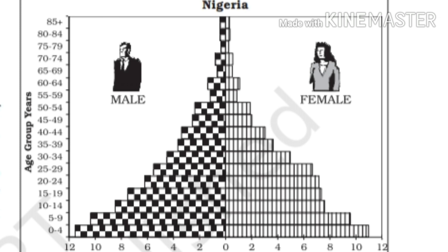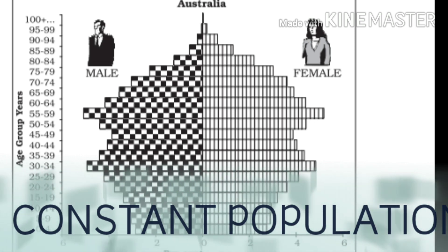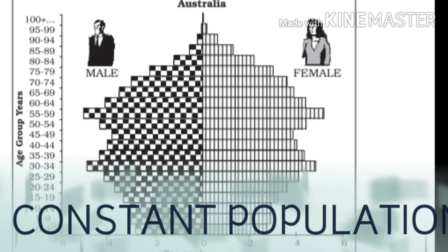In this pyramid, age group years are shown on the vertical lines or y-axis and their proportion or percentage are shown on the x-axis or horizontal lines. This pyramid is for constant population. Australia's population pyramid is bell-shaped, tapered towards the top. This pyramid is drawn for countries where both the birth and death rates are almost equal, showing a stagnant or constant population.